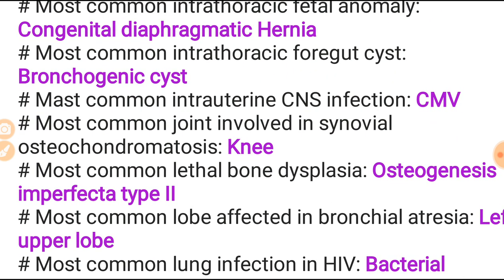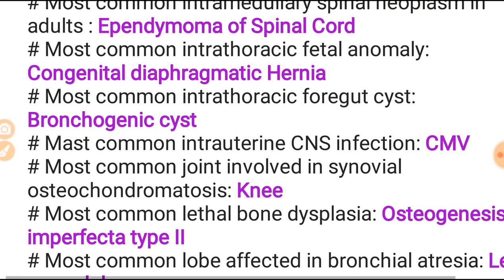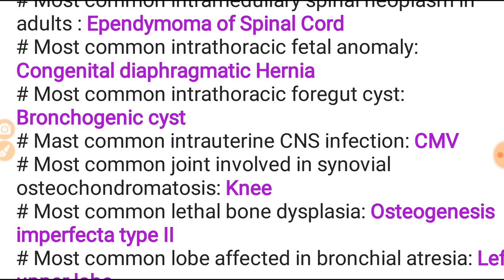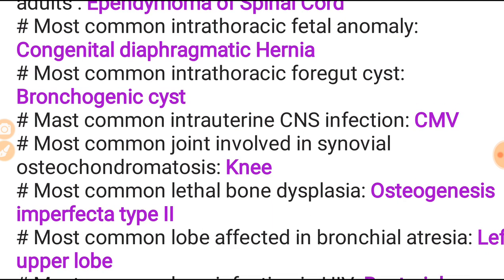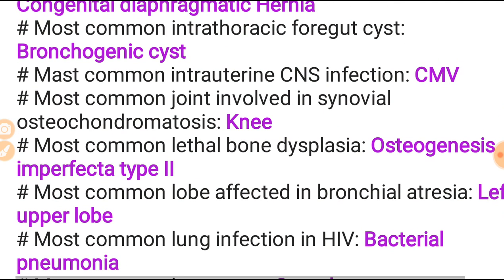Most common intrathoracic fatal anomaly is congenital diaphragmatic hernia - it is the most fatal condition. Most common intrathoracic foregut cyst is bronchogenic cyst. The location of the diaphragmatic hernia is the posterolateral position. Most common intrauterine CNS infection is CMV infection.